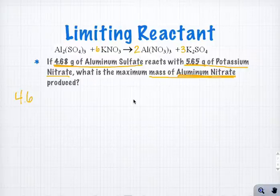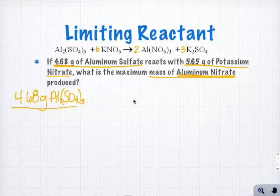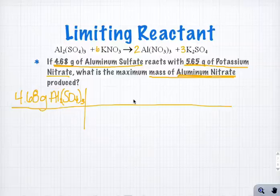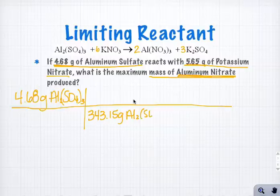So if I have 4.68 grams of aluminum sulfate, that's the Al₂(SO₄)₃, I'm going to convert that to grams of my aluminum nitrate. So my first step is to get my grams of aluminum sulfate into moles using the molar mass of aluminum sulfate, and that would be 343.15 grams of aluminum sulfate to every one mole.